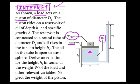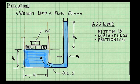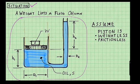This pressure lifts this fluid column up to a height H2. This is the problem goal, and we're told to neglect the weight of the piston. To define the situation, I sketch my situation diagram and state my assumptions.